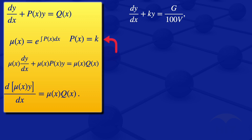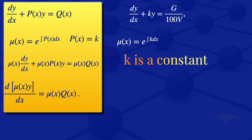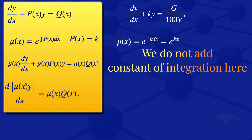We use this p of x to obtain our integrating factor. The integrating factor mu of x equals the exponent of the integral of p of x dx, which is the exponent of the integral of k dx. Since k is a constant, this integral gives us exponent of kx. We do not add a constant of integration when evaluating the integrating factor.